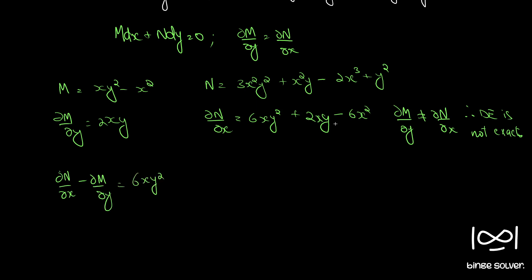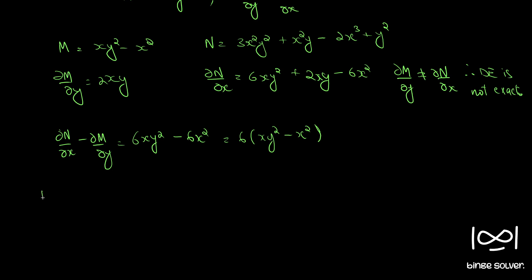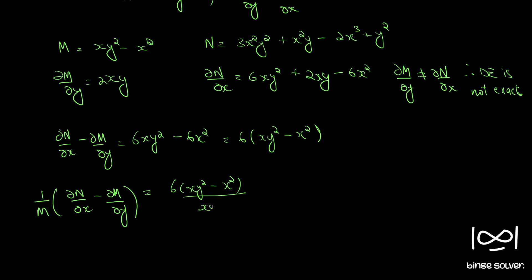So we have 6xy² + 2xy - 2xy - 6x², where the 2xy terms cancel, leaving 6xy² - 6x². This is comparable to 6 times (xy² - x²), which is 6 times M. So dividing by M: (1/M)(∂N/∂x - ∂M/∂y) = 6/(xy² - x²) × (xy² - x²) = 6. These two cancel and we get 6.